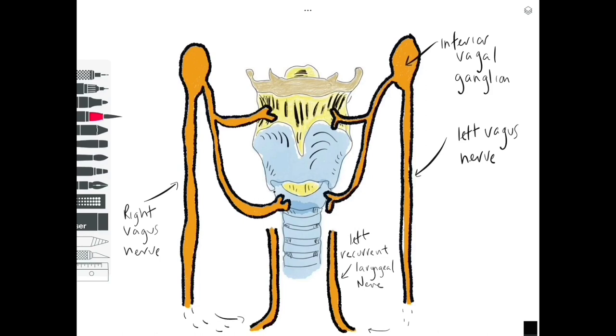First of all, we've got the recurrent laryngeal nerves which are branches of the vagus and we have one of those on the left and the right side. It's worth bearing in mind that they have slightly different courses on the left and the right side, with the left one dipping down lower around the arch of the aorta, while on the right side the recurrent laryngeal nerve comes around the subclavian artery.